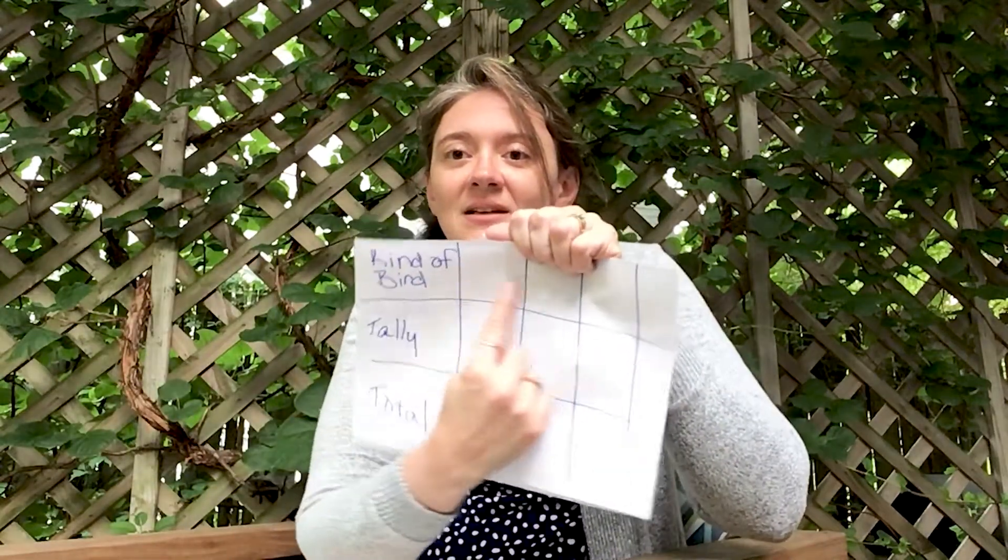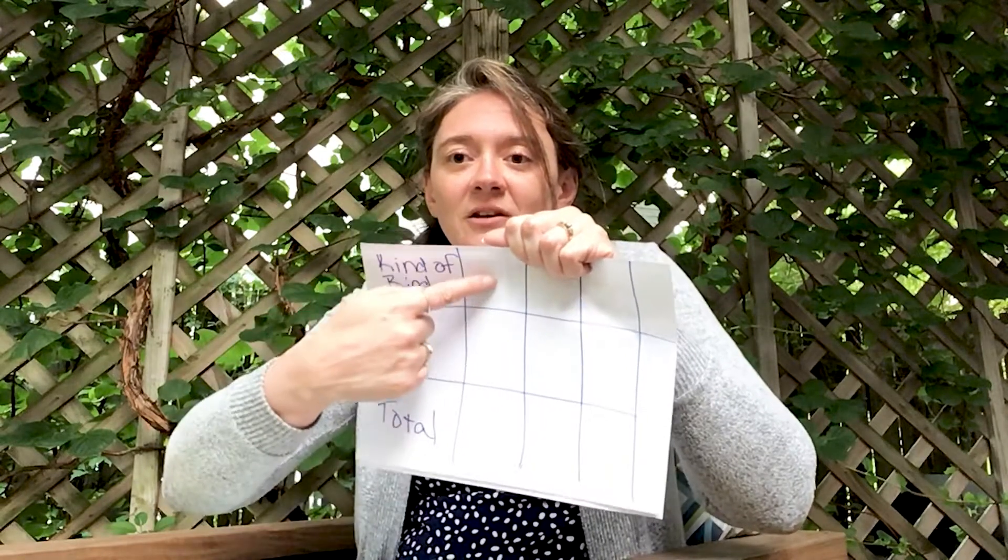One way to do this is with a data table. A data table is a chart — it lists information in rows and columns. Rows go across, and columns go up and down. You can also use tally marks to count how many birds you see, and add your tally marks to find out how many birds you saw of each kind and in all.